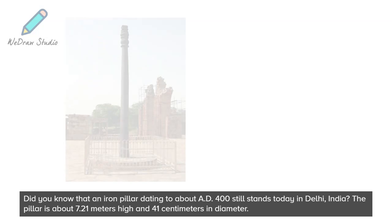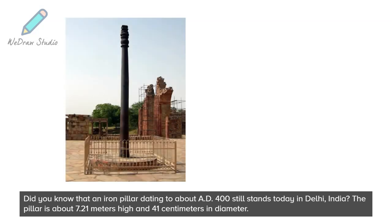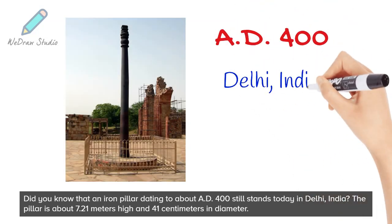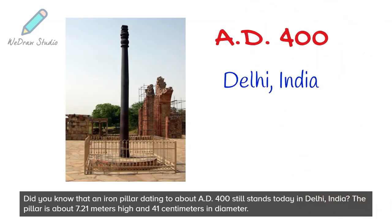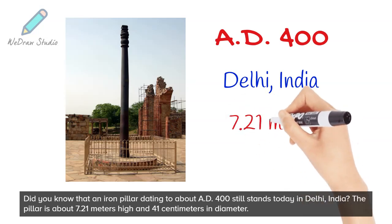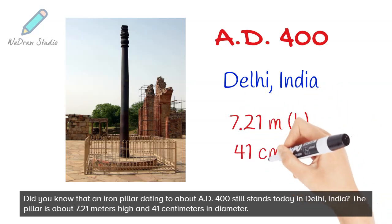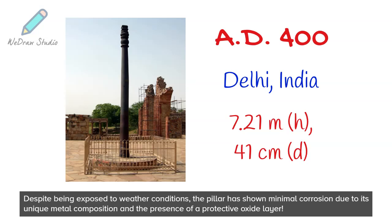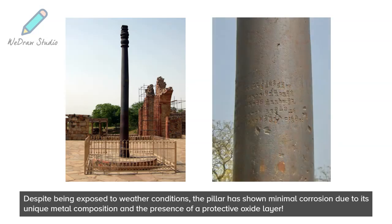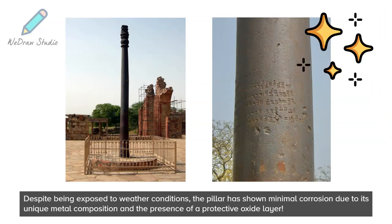Did you know that an iron pillar dating to about AD 400 still stands today in Delhi, India? The pillar is about 7.21 meters high and 41 centimeters in diameter. Despite being exposed to weather conditions, the pillar has shown minimal corrosion due to its unique metal composition and the presence of a protective oxide layer.